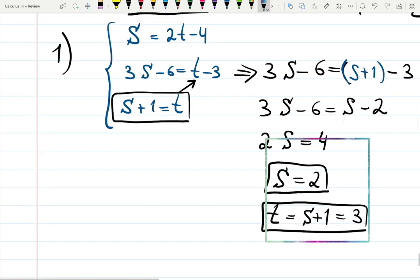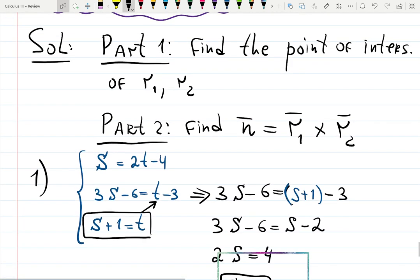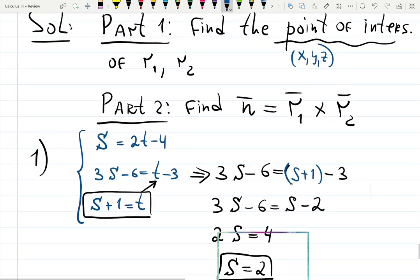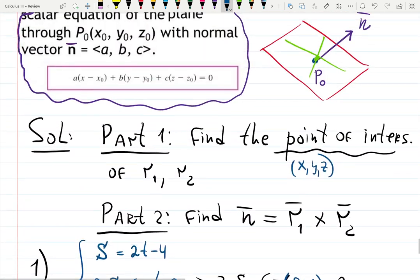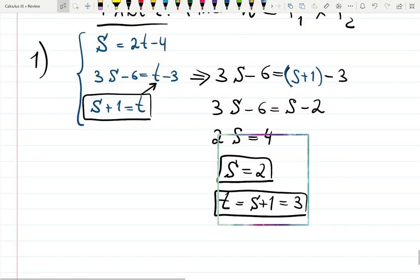However that's not a point. I mean there was a point of doing that, but we need to have a point of intersection in the form of (x, y, z). Okay, not s and t. S and t are parametrizations. So let's find these. As I just mentioned to you before, s is x, y is 3s-6, and z is s+1, or 2t-4, t-3, and t both will work so it doesn't really matter.